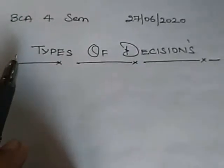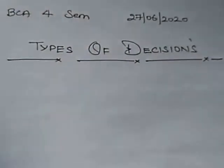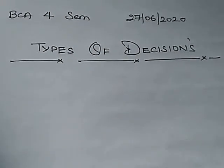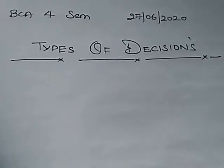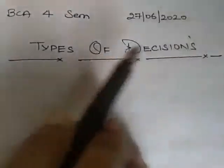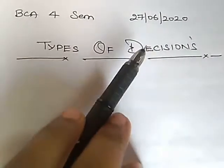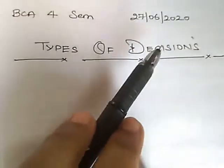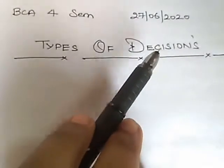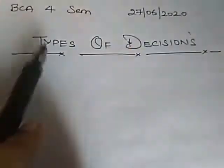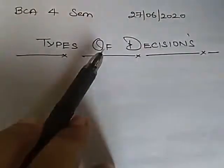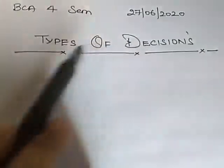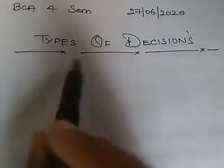Friends, hope you will be fine. Today, we will study about the types of decisions available in MIS. Broadly, the types of decisions are classified into two types.